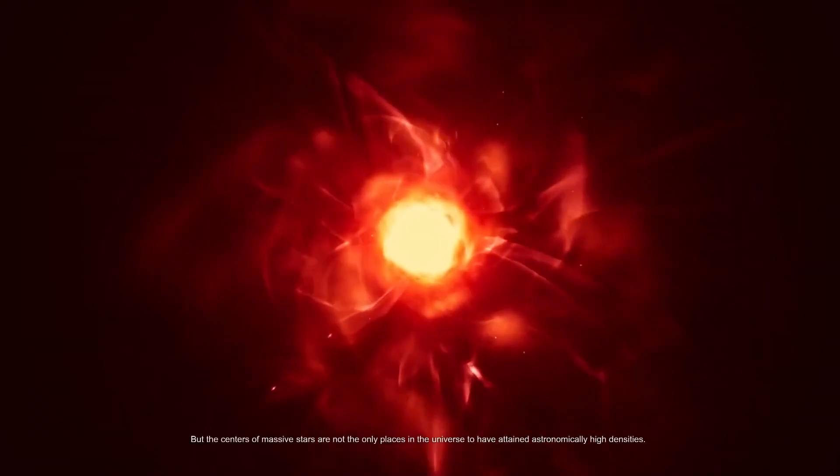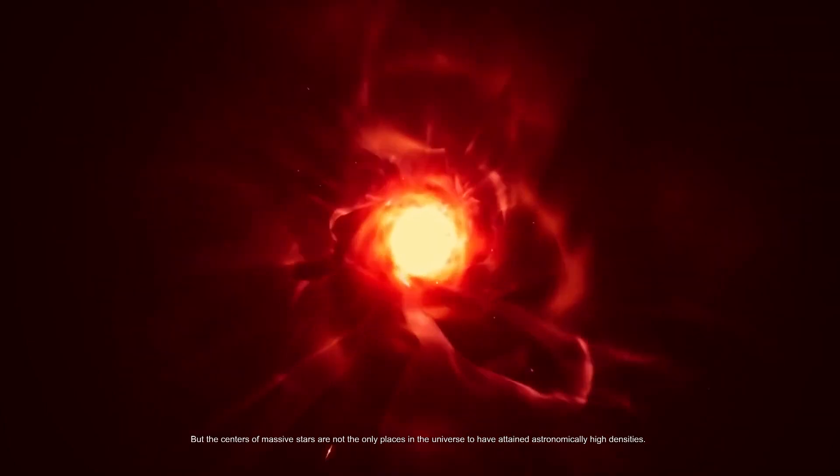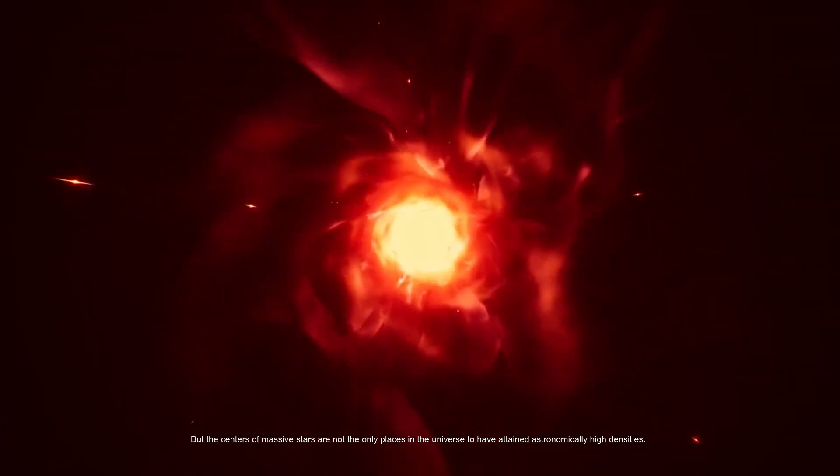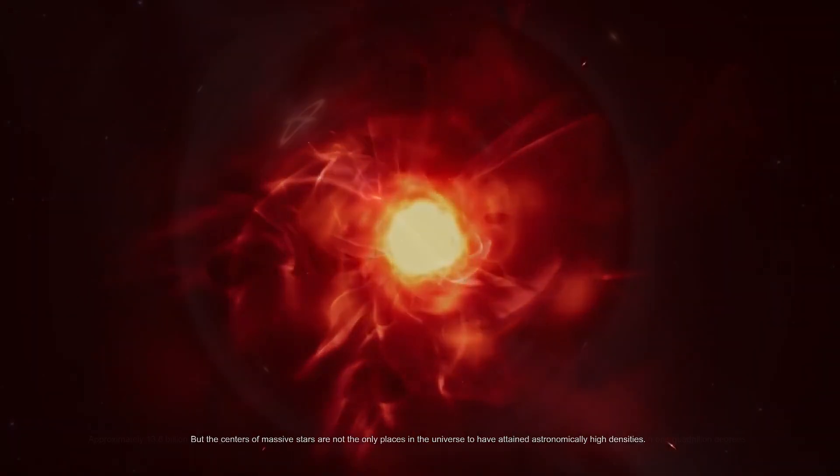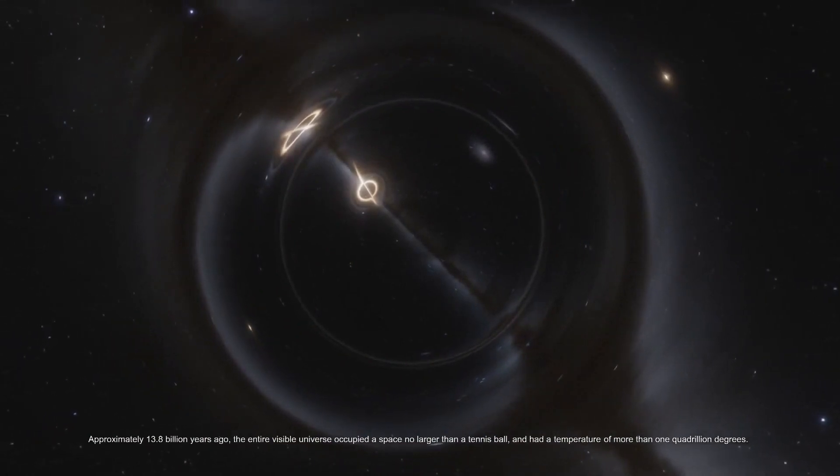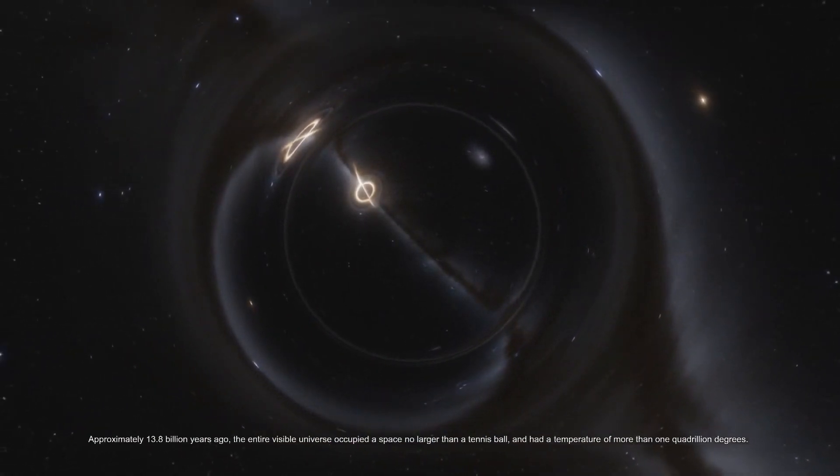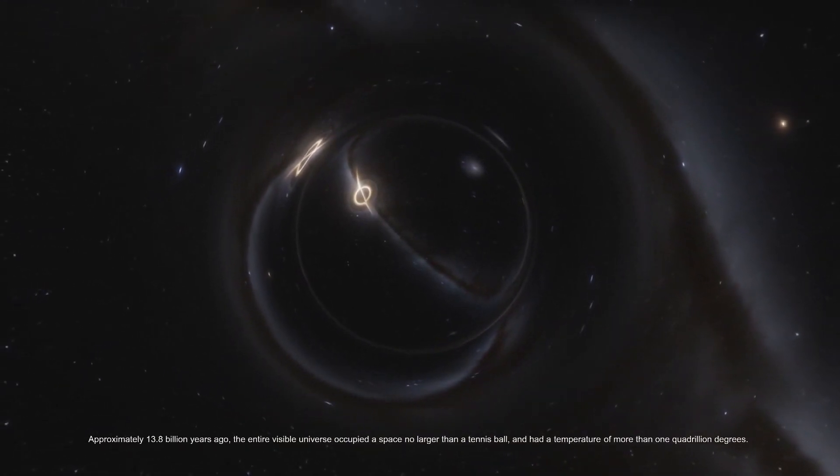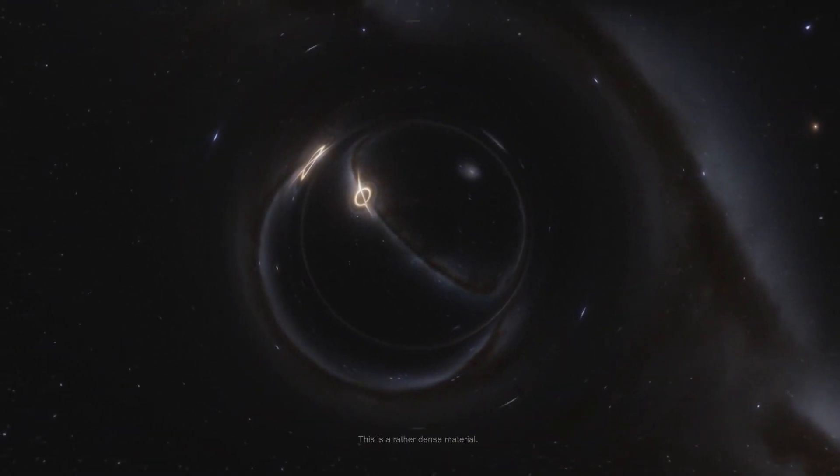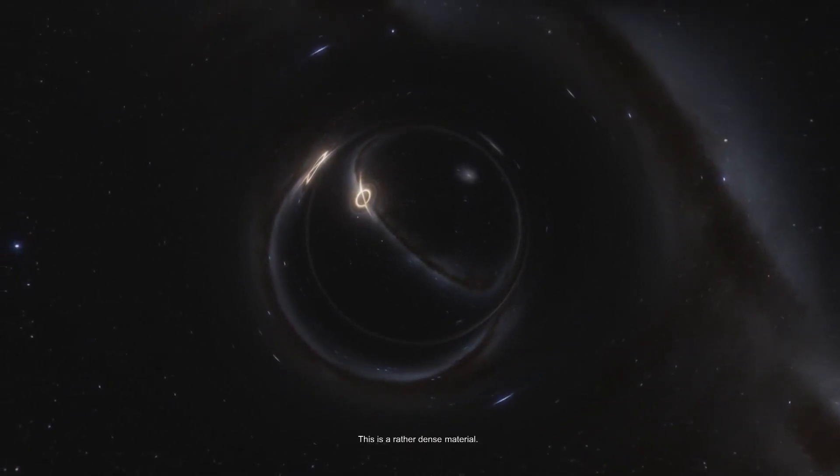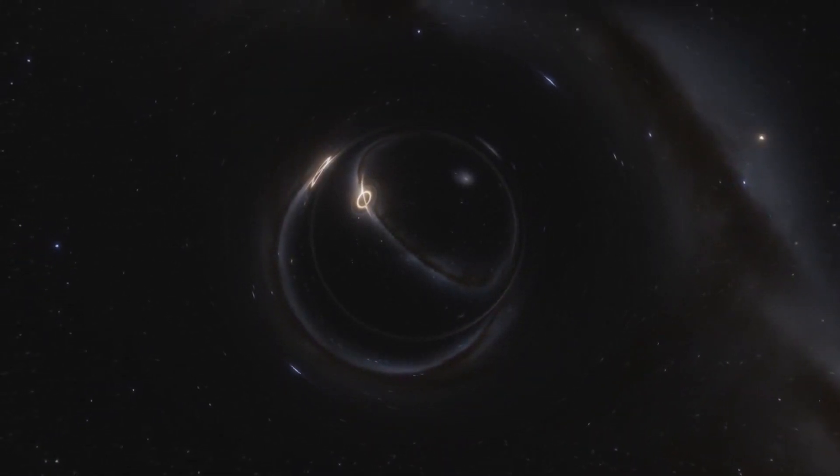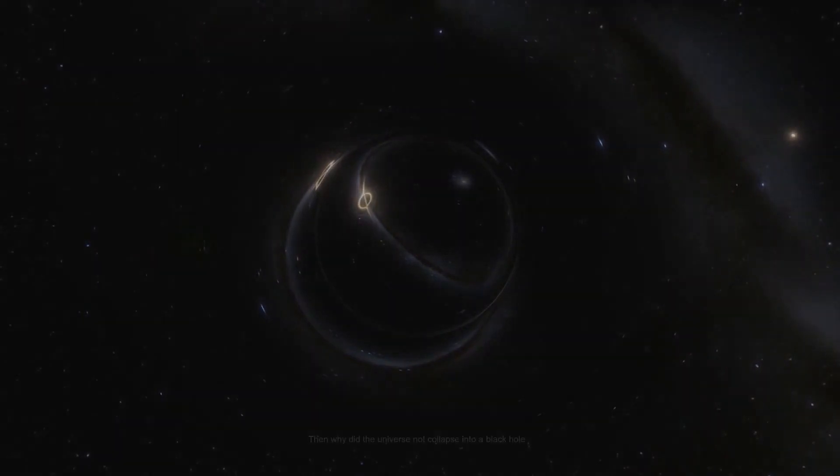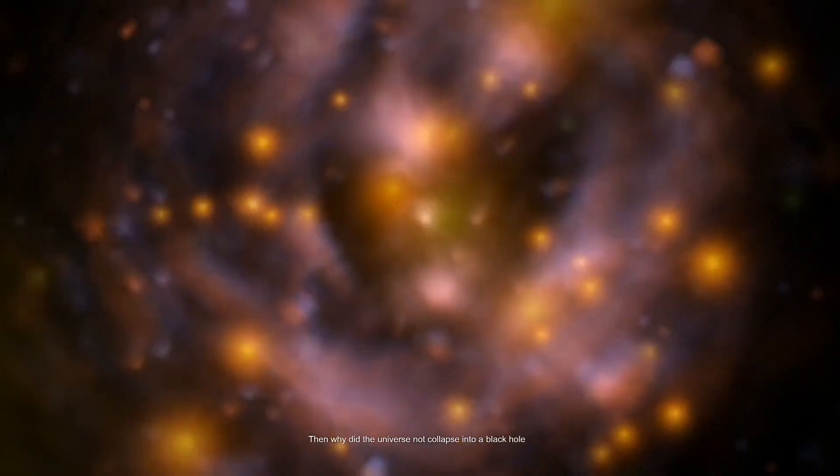But the centers of massive stars are not the only places in the universe to have attained astronomically high densities. Approximately 13.8 billion years ago, the entire visible universe occupied a space no larger than a tennis ball and had a temperature of more than 1 quadrillion degrees. This is a rather dense material. Then why did the universe not collapse into a black hole?